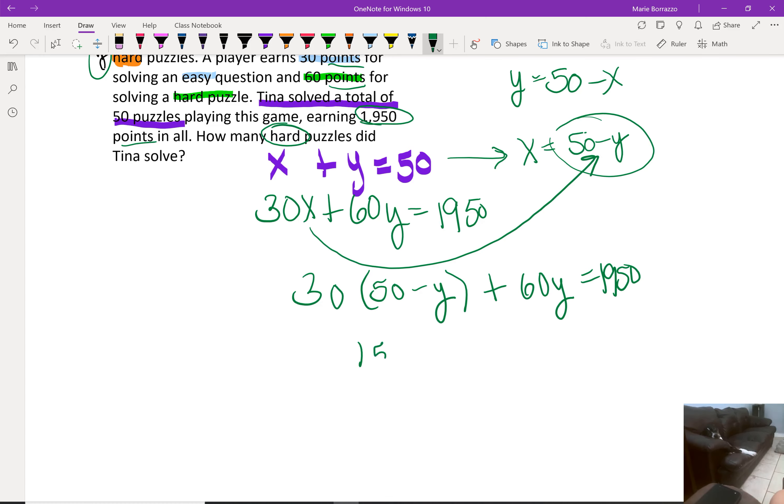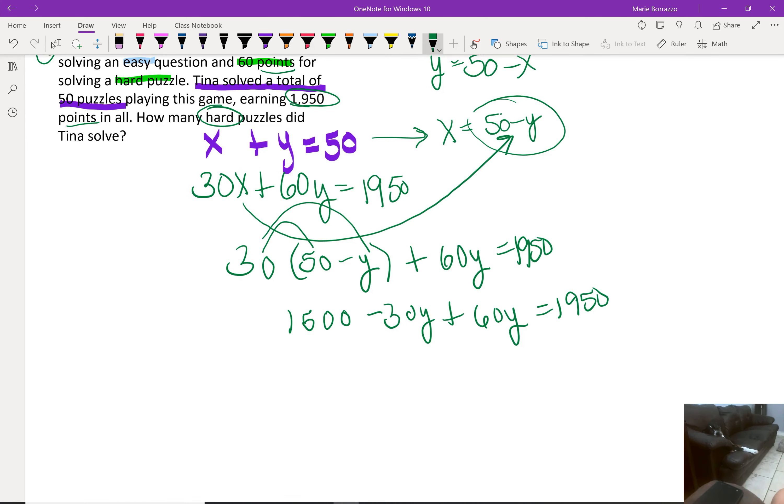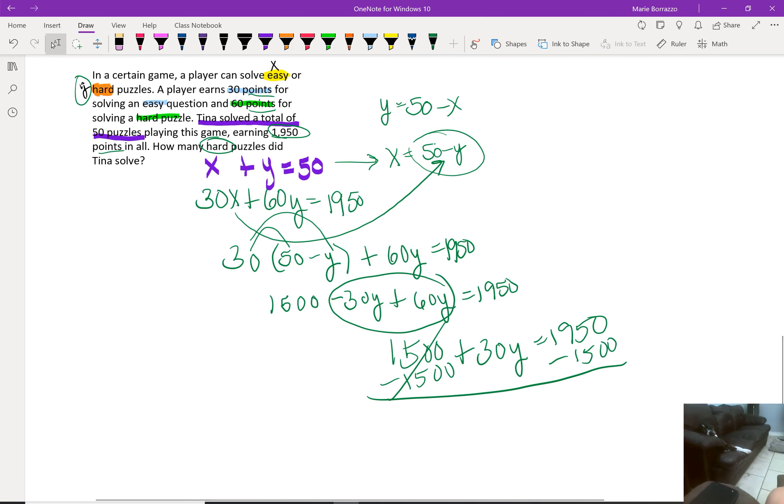So this is 1,500 minus 30y plus 60y is equal to 1,950. Okay, so all I did was multiply these two, multiply those two. And now I'm going to gather like terms. So if I gather like terms, I'm going to get 1,500 plus 30y is equal to 1,950. I'm then going to subtract 1,500 on both sides. Okay, so that'll cancel, that'll leave me with 30y. That leaves me with 450. Now obviously if I have 450 divided by 30...